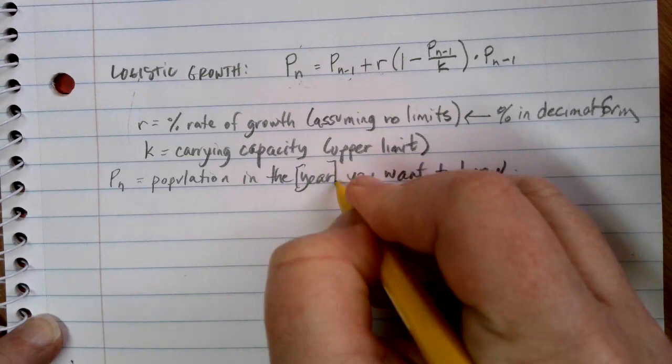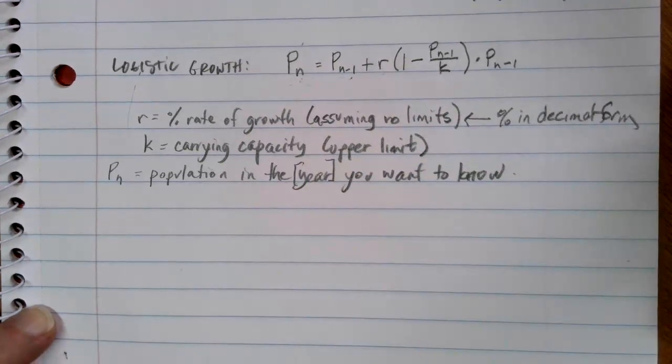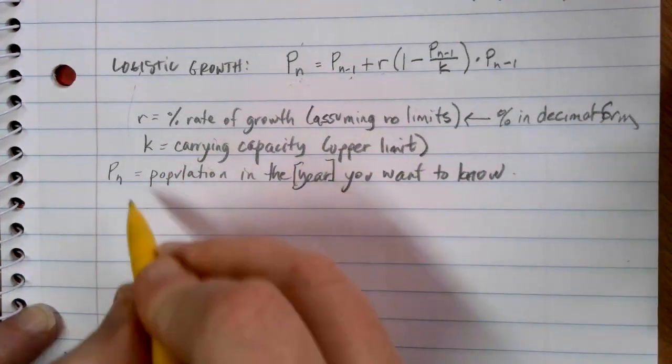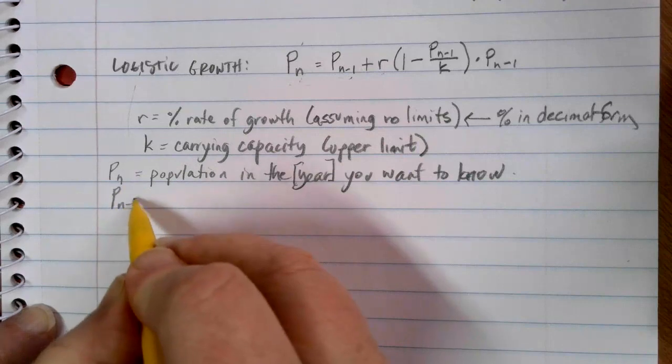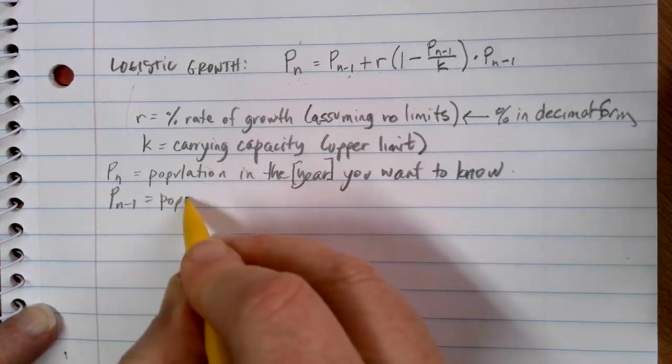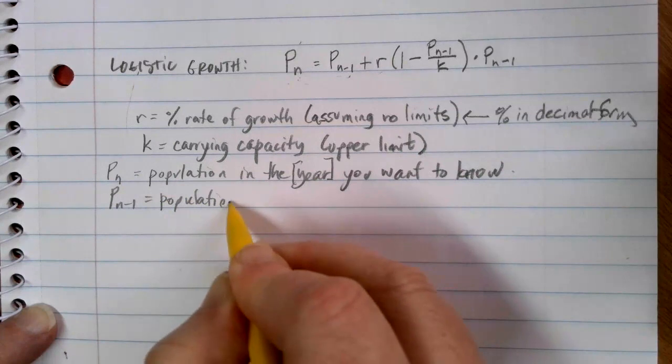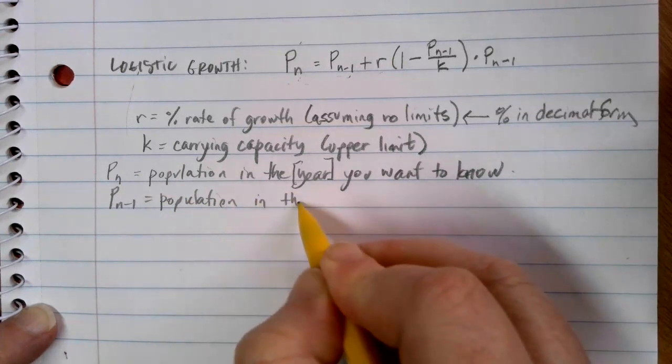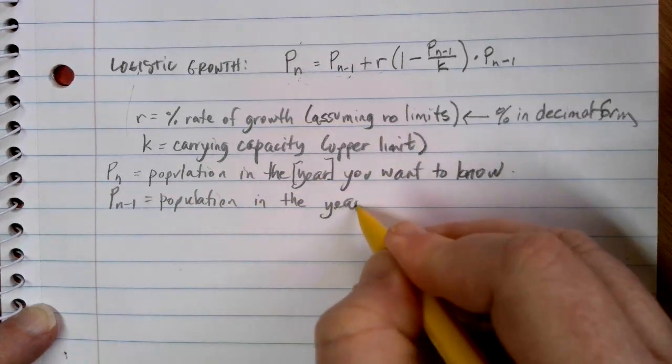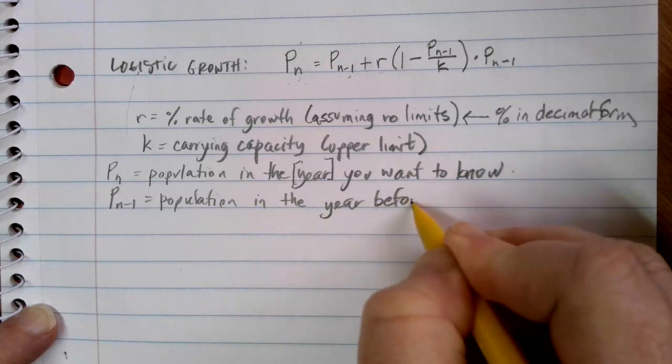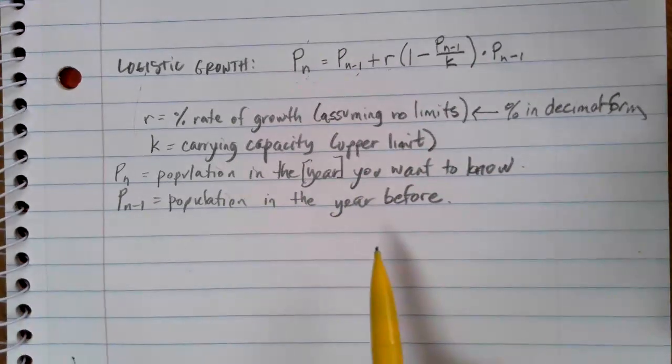In this case, P of N is going to be the population in the year you want to know. And again, this could be year, minute, month, whatever our growth rate is measured in. And the P of N minus 1 is going to be the population in the year before that, before what you want.